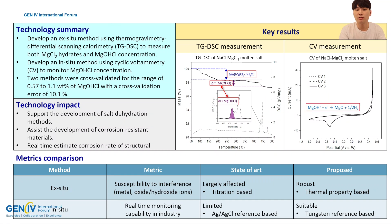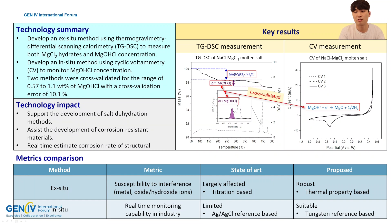In the molten salt, magnesium hydroxychloride exists as MgOH plus cations, allowing for electrochemical monitoring. Using a tungsten reference electrode, we identified the irreversible reduction peak of magnesium hydroxychloride and established a reliable electrochemical measurement method.